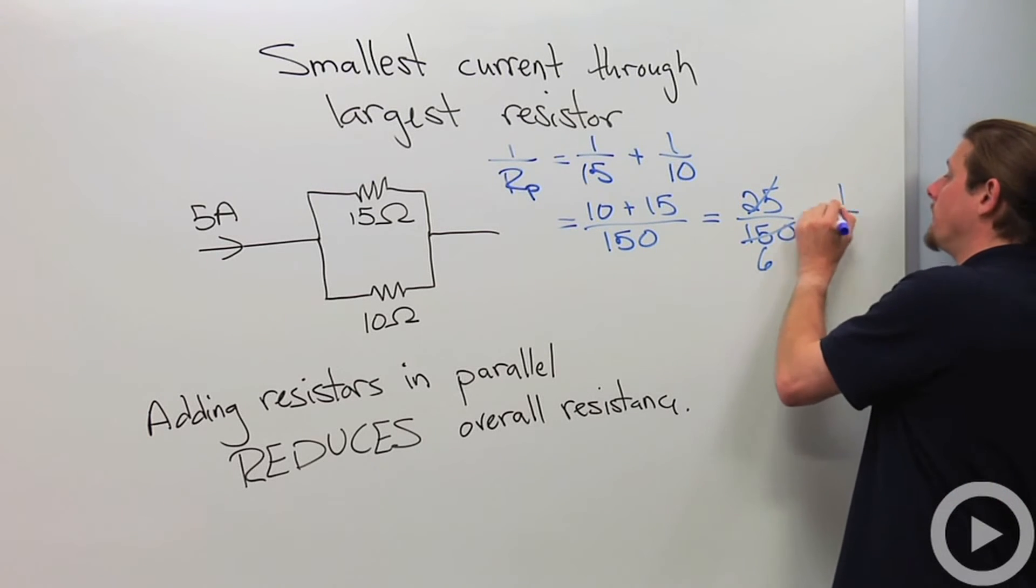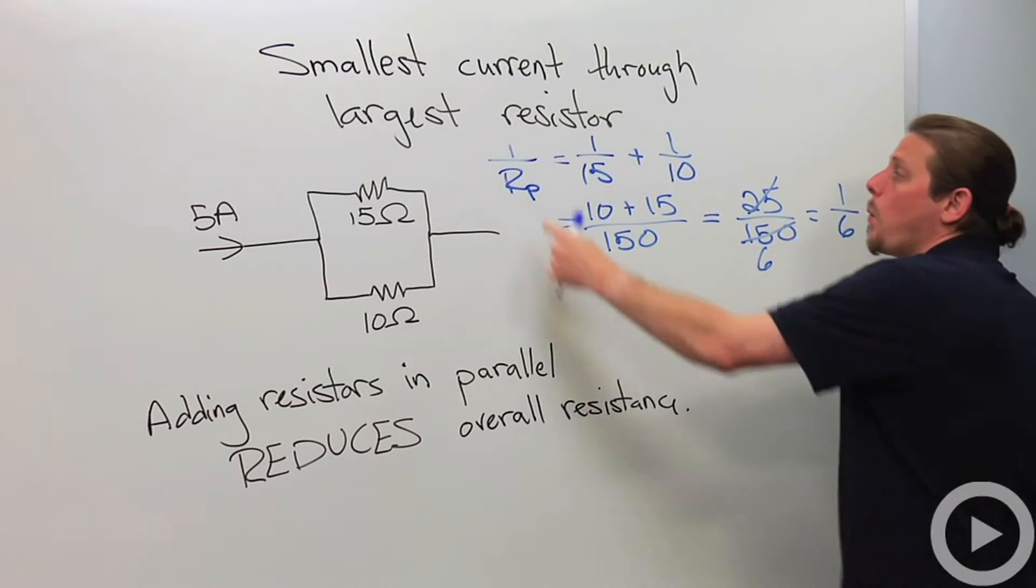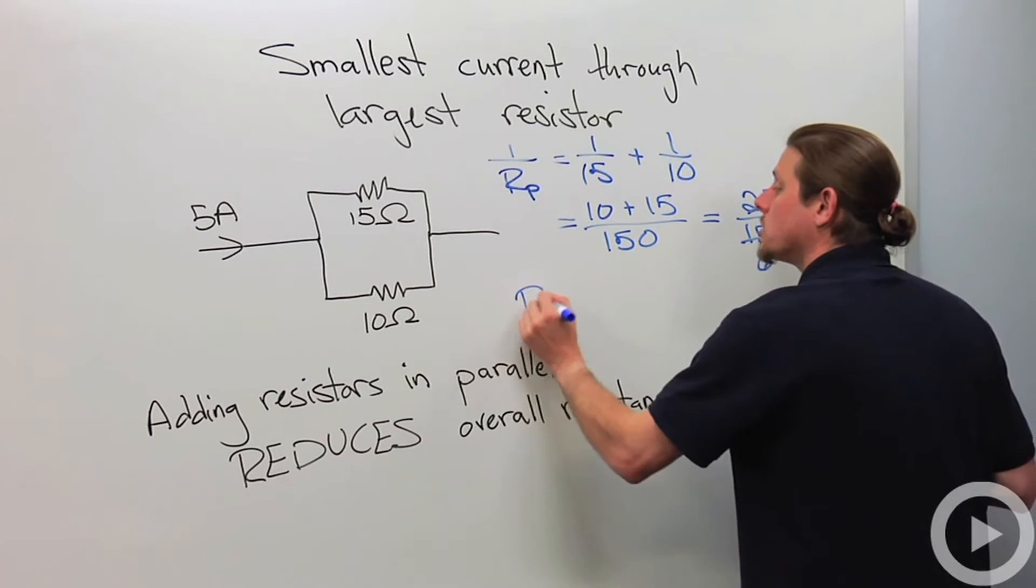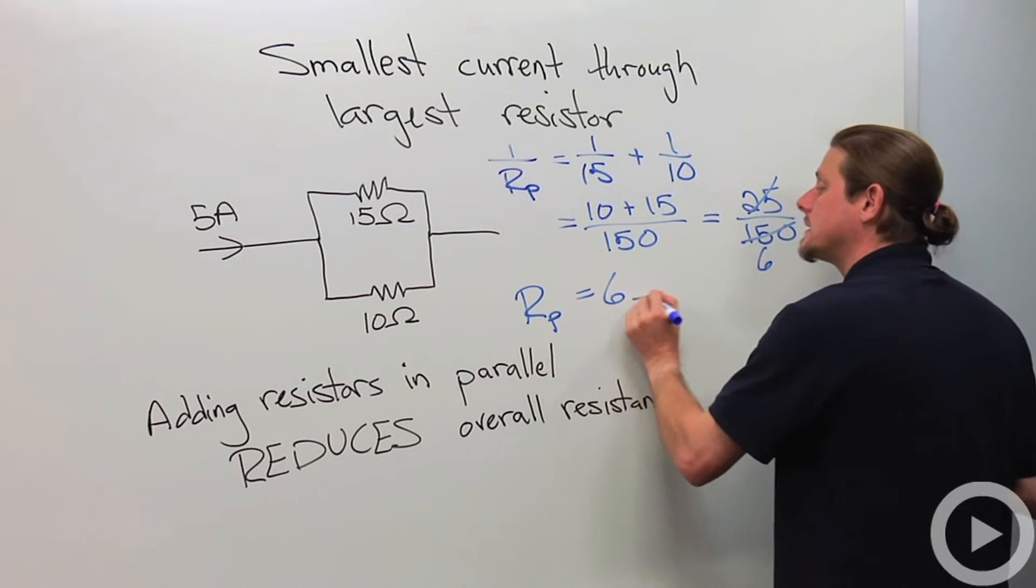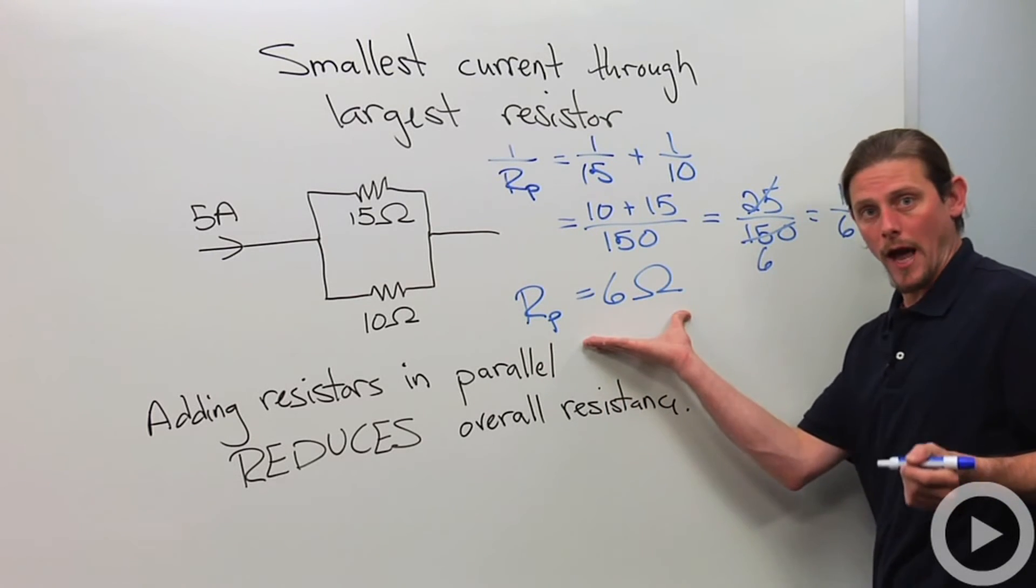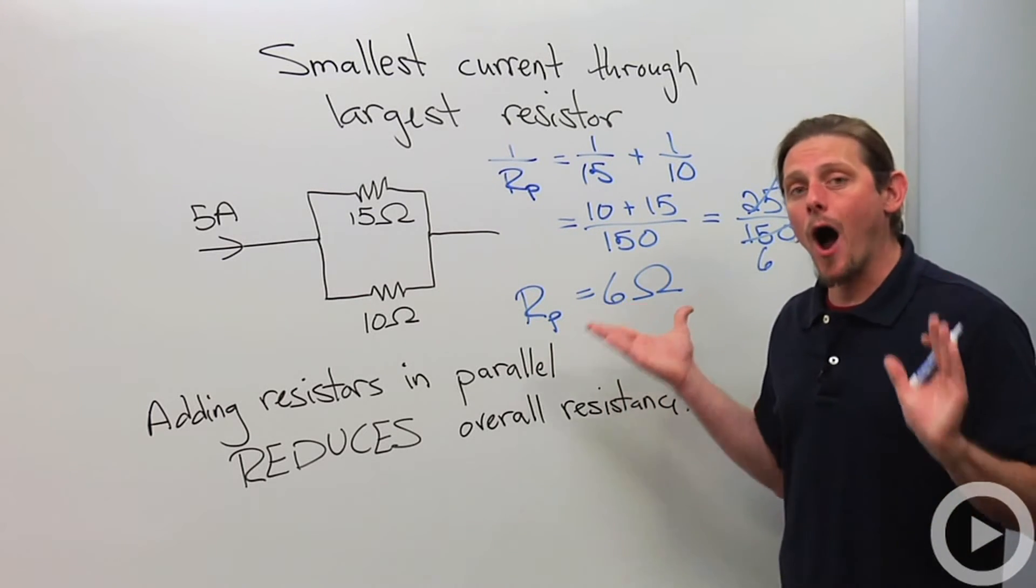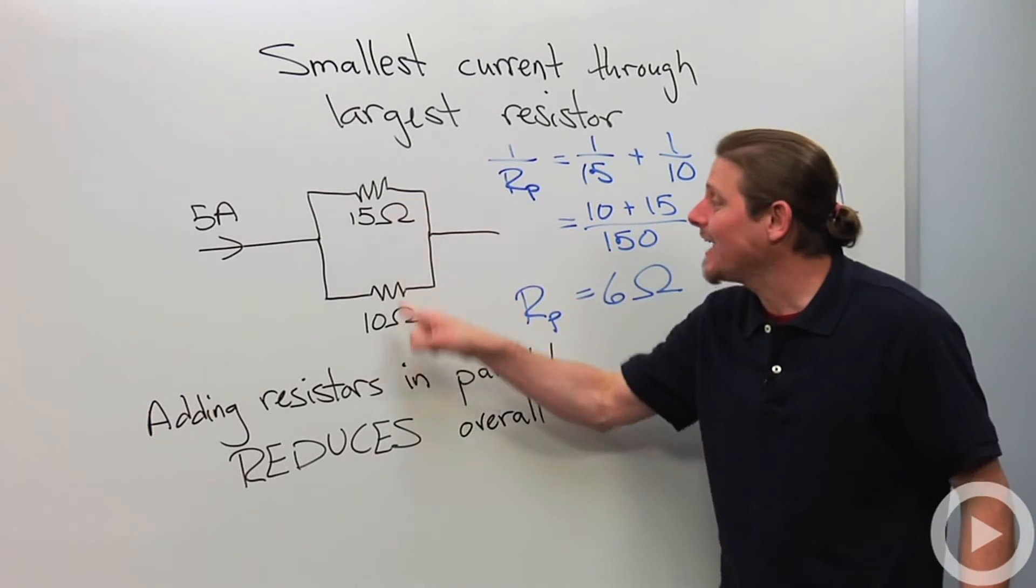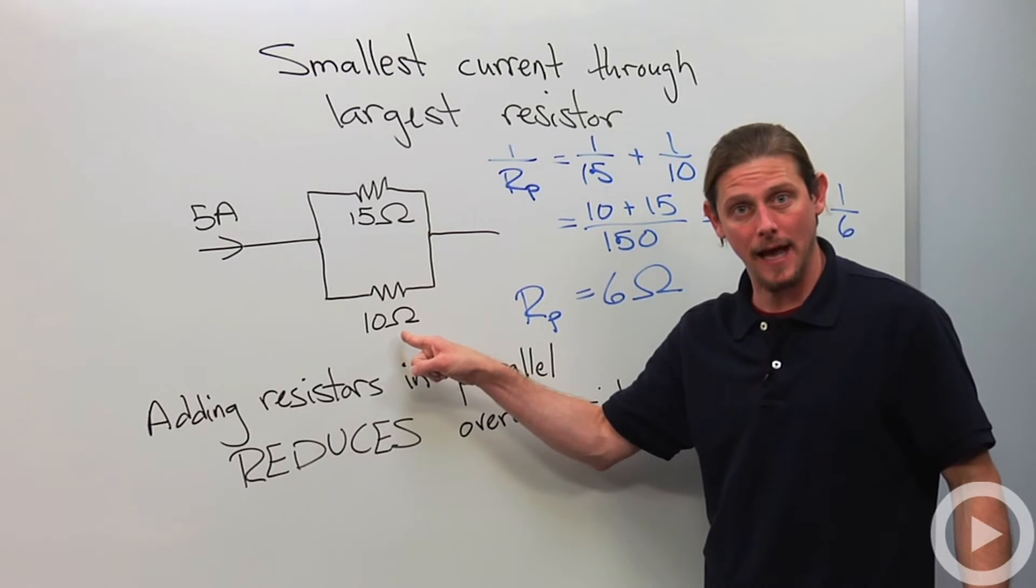10 plus 15 is 25 over 150, and if we do this carefully, we can cancel. So this gives us 1 sixth. 1 over our parallel is 1 over 6. So that means our parallel equals 6.